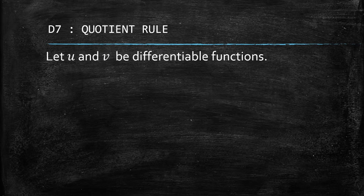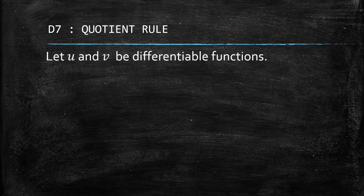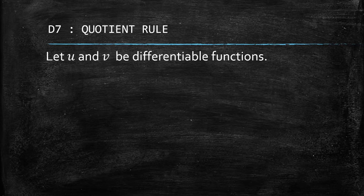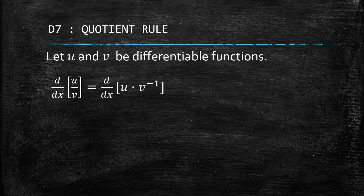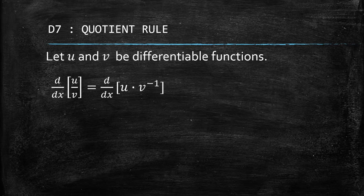Let's go prove this rule. In proving this, we have u and v as differentiable functions. For this proof, I'll be using the eighth rule, which is chain rule. If you really want to know what chain rule is, just follow the next differentiation rule. Chain rule is actually very useful in this scenario because it will help us simplify the proof for the quotient rule.